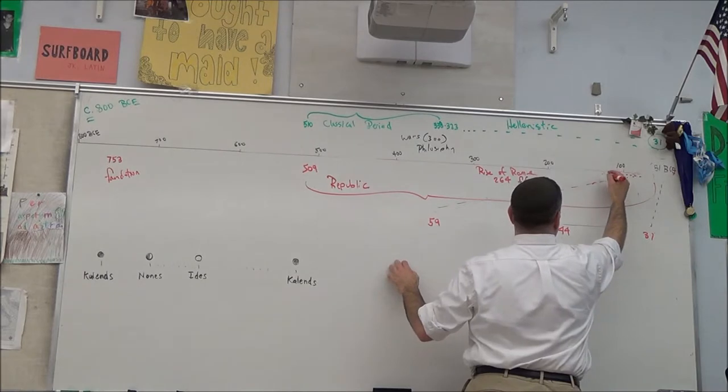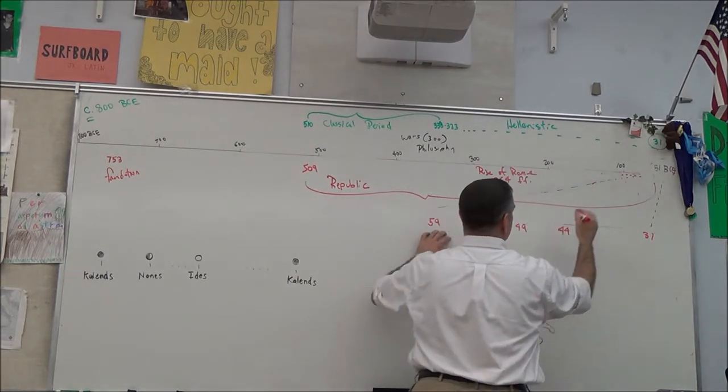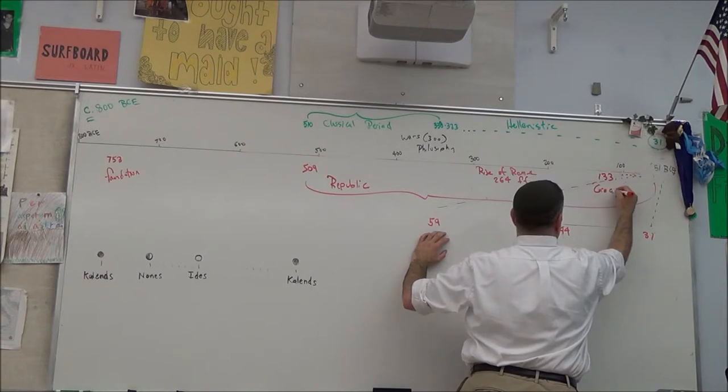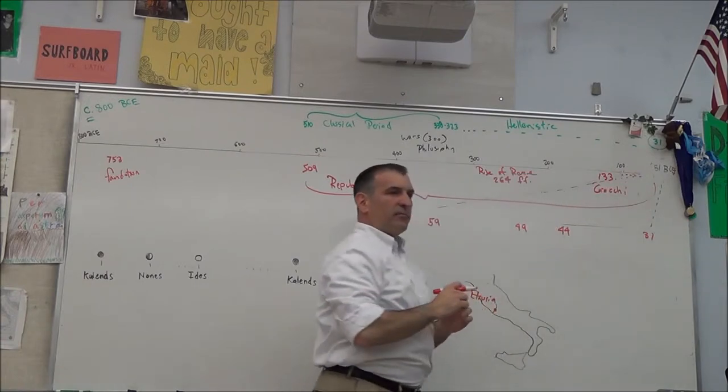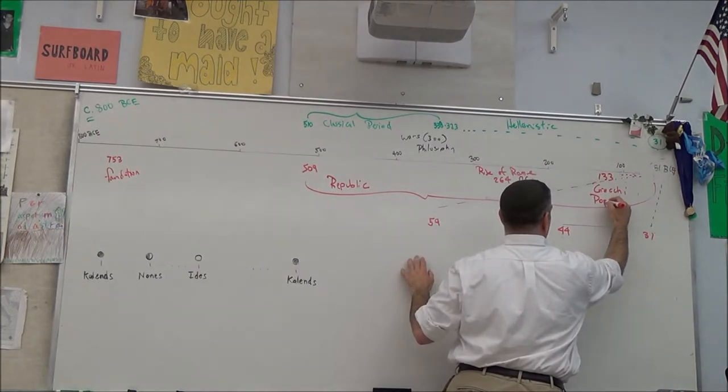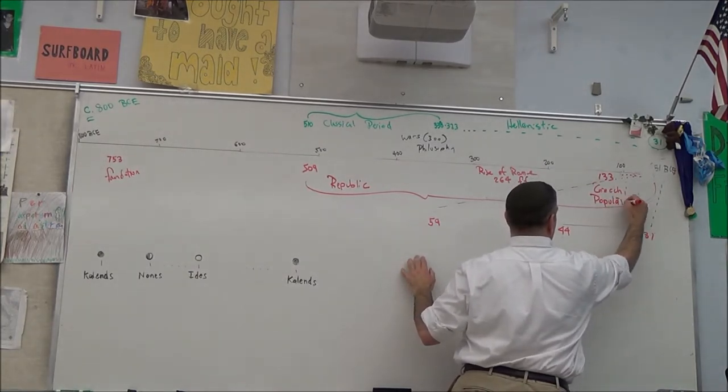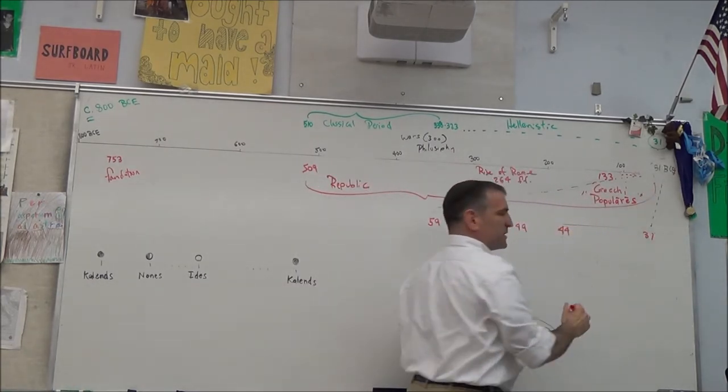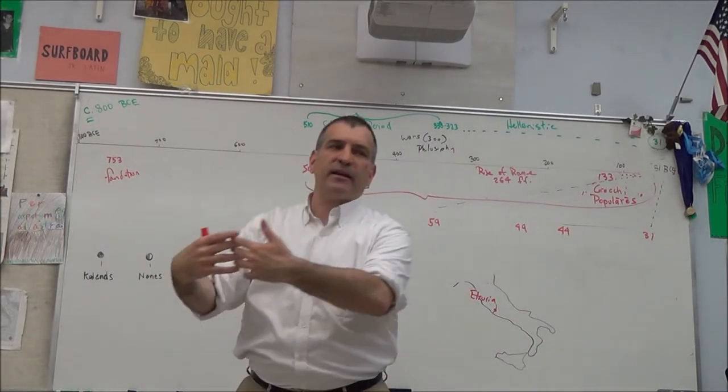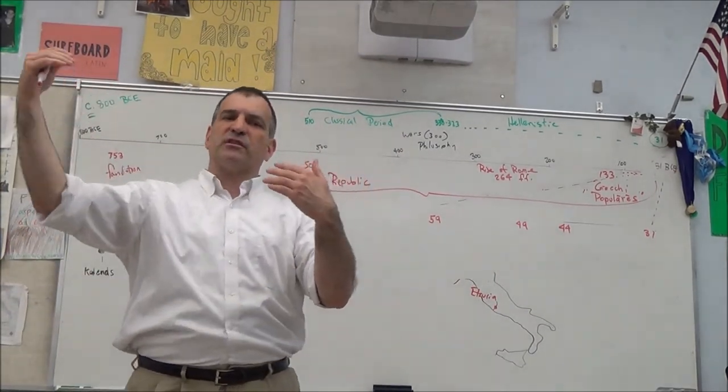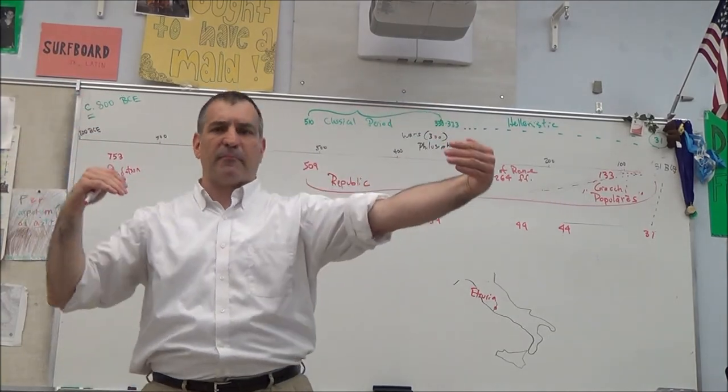And the last date I'm going to talk about before we get to Caesar is 133. And those are the Gracchi brothers, and I only mention them because they're the head of the popular party, the Populares. You can say populists, is probably an apt description, which is to say, 133, for the next 50 years, is going to be a lot of quarreling between these two factions, the conservatives and the populists.